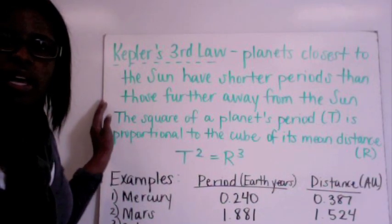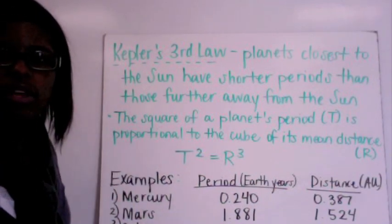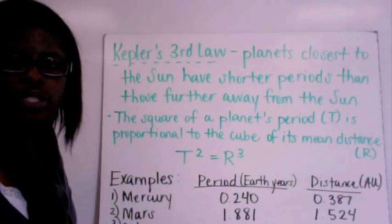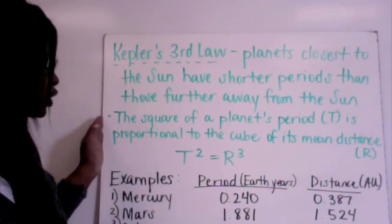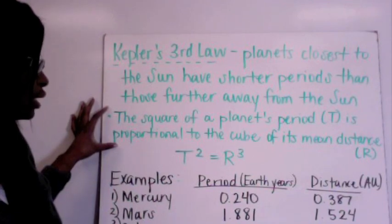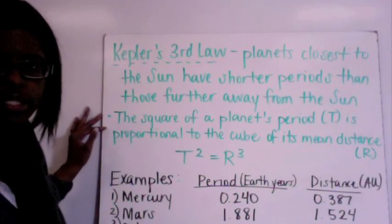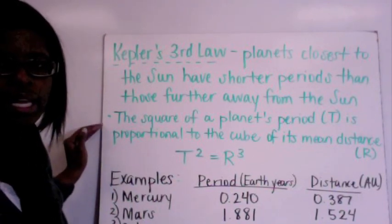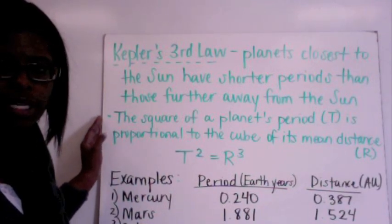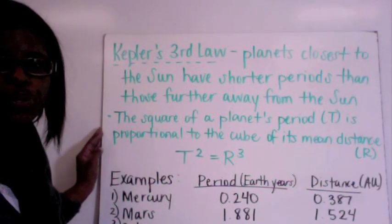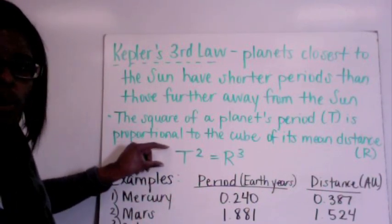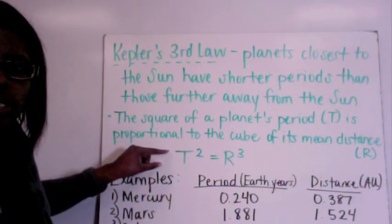So now we have Kepler's third law. This states that the planets closest to the Sun have shorter periods than those further away from the Sun. Proportionality is going to be covered here like it was in Kepler's second law, but it's referring to the distance and the planet's period. So the square of a planet's period which is going to be represented by T is proportional to the cube of its mean distance which is going to be represented by R. So that simple equation here is T squared equals R cubed.